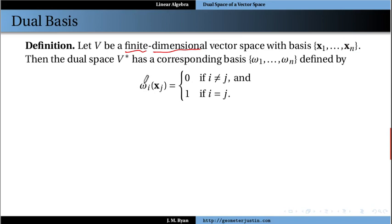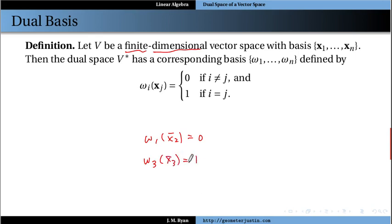These are defined as follows: omega i of Xj is equal to 0 if i is not equal to j — so if the indices are different — and it's equal to 1 if they have the same indices. So for example, omega 1 of X2 is equal to 0, and omega 3 of X3 would be equal to 1. That is how these functions are defined.